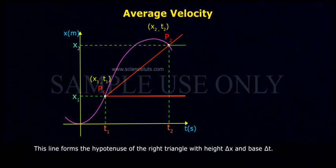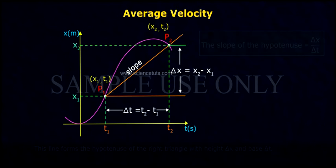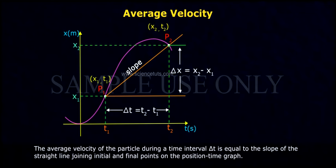This line forms the hypotenuse of a right triangle with height delta x and base delta t. The slope of the hypotenuse is delta x by delta t. The average velocity of the particle during a time interval delta t is equal to the slope of the straight line joining initial and final points on the position-time graph.